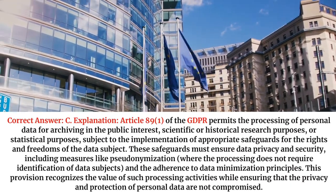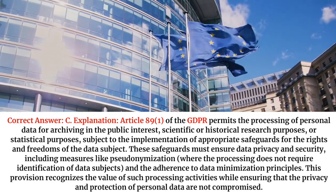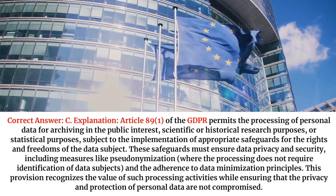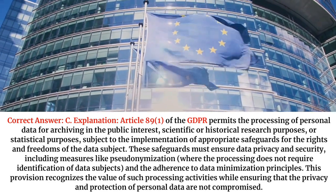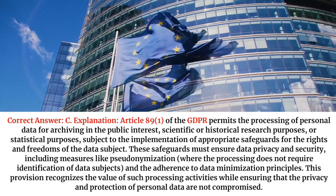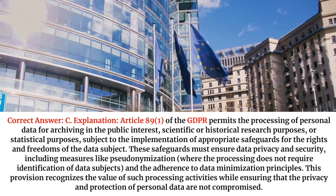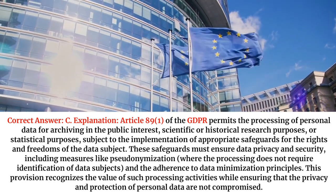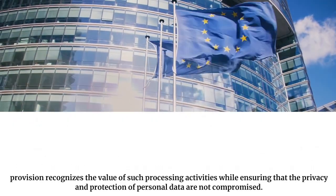Explanation. Article 89-1 of the GDPR permits the processing of personal data for archiving in the public interest, scientific or historical research purposes, or statistical purposes, subject to the implementation of appropriate safeguards for the rights and freedoms of the data subject. These safeguards must ensure data privacy and security, including measures like pseudonymisation and adherence to data minimisation principles. This provision recognises the value of such processing activities while ensuring that the privacy and protection of personal data are not compromised.